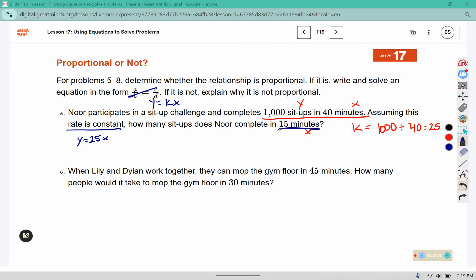So 25 times 15 will tell us how many sit-ups they can complete in 15 minutes. And that is 375 sit-ups. Noor completes 375 sit-ups in 15 minutes.